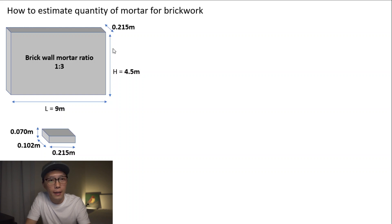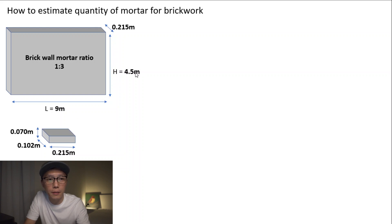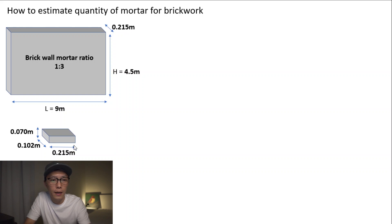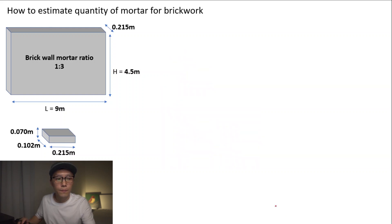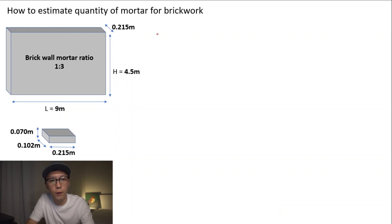From these illustrations, the information given is: the length of the brick wall is 9 meters, the height of the brick wall is 4.5 meters, and the thickness is 0.215 meters. These are also the dimensions for one brick. So let's start.